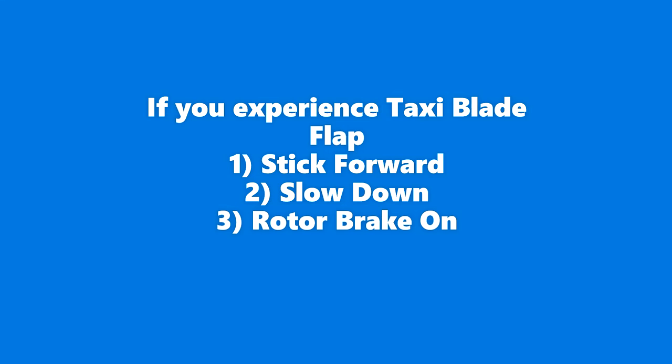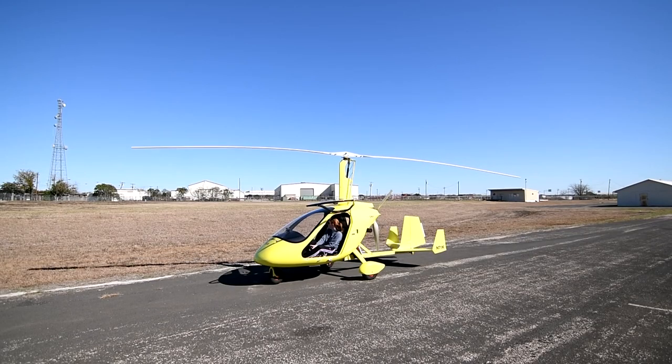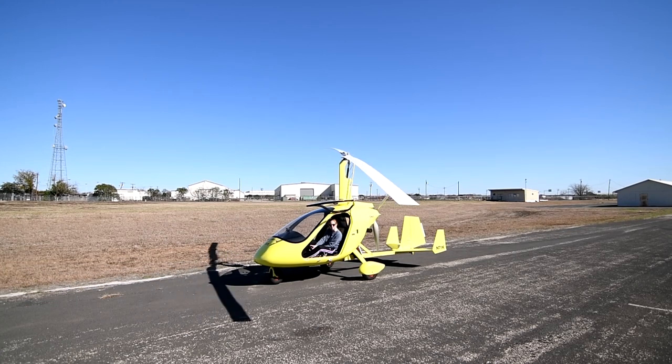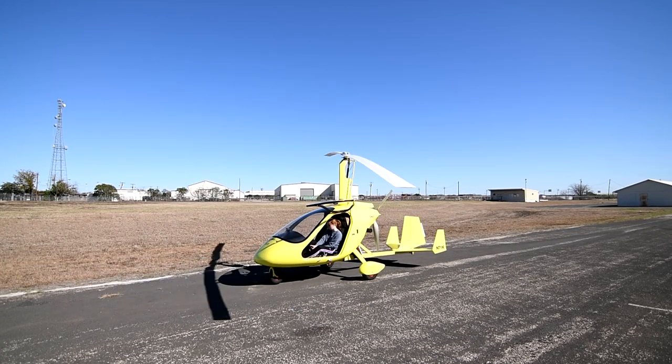If you experience blade flap while taxiing, you do three things: you move the stick forward, you slow down, and you put the rotor brake on. Keep in mind it doesn't take a whole lot of rotor RPM to get blade flap.